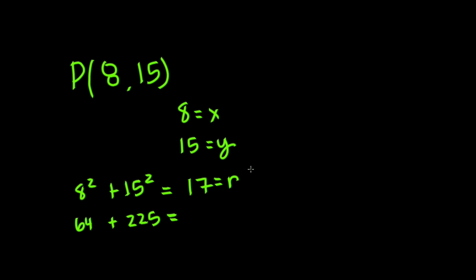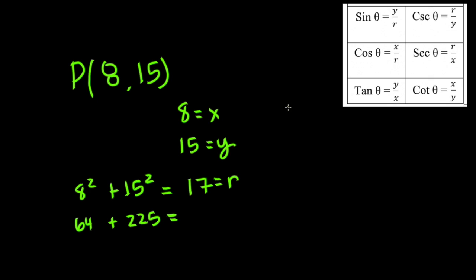Now all that is left is plugging in the correct numbers into the correct equations. Go ahead and pause the video and try it out. Alright, let's do this now. So if we look at our table, we can see that sine is equal to y over r. So our sine value is going to be 15 over 17. Our cosine value is equal to x over r, so our cosine is going to be 8 over 17. And our tangent is equal to 15 over 8, which is y over x.